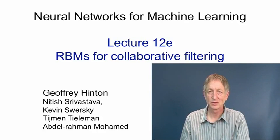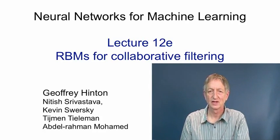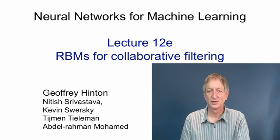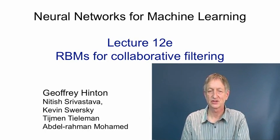In this video, I'm going to talk about applying restricted Boltzmann machines to collaborative filtering. Collaborative filtering means trying to figure out how much a user would like one product based on how much that user liked other products and how much many other users like products. The particular case we'll look at is the Netflix competition, in which a machine learning algorithm has to predict how much a particular user will like a particular movie. The training data consists of 100 million ratings of 18,000 movies by half a million users — quite a big data set.